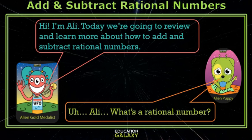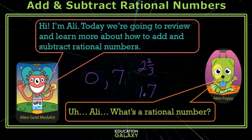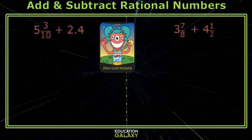Allie, what's a rational number? Rational numbers include whole numbers like 0 or 7, fractions like 2 and 2 thirds, or decimals like 1 and 7 tenths. There are other numbers that are rational numbers that you'll learn about in 6th grade.